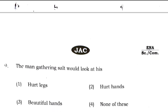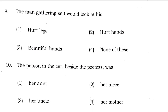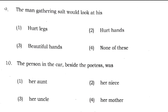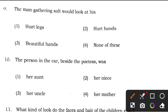The man gathering salt would look at the hands that have been hurt — the injured hands. So the answer to question 9 is option 2. Question 10: the person in the car beside the poetess was — very easy question — option 4, her mother.